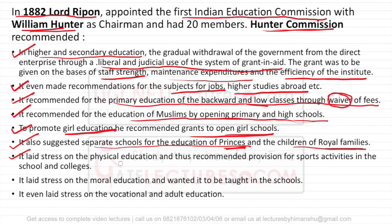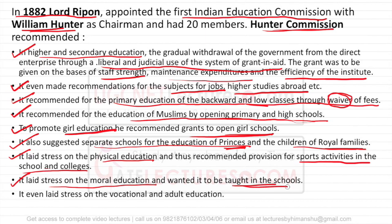The commission laid stress on physical education, believing it was equally important, and recommended provision of sports activities in colleges and schools. It also laid stress on moral education, teaching moral values in schools — something we still do today. Hunter Commission additionally emphasised vocational and adult education, which has become very important in today's world.